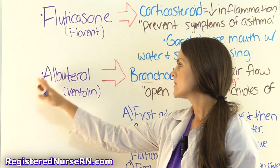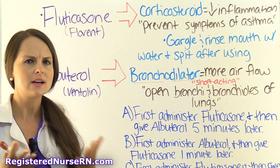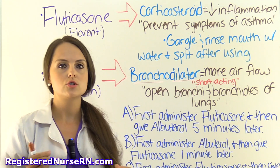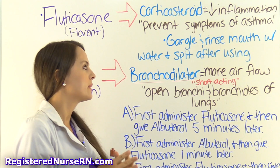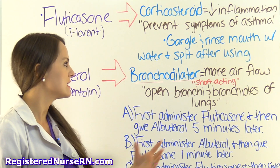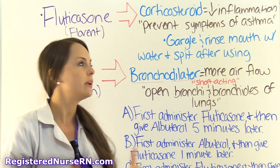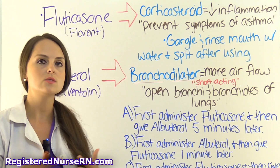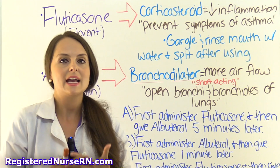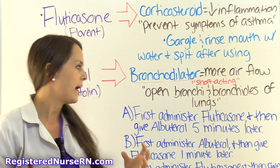Our next drug is albuterol, which is Ventolin. What is albuterol? It is a bronchodilator, and specifically a short-acting one, so it works for a short period of time. Just as its name says, it's going to open the bronchi and bronchioles of the lungs, so you get more airflow through those lungs. This is what a person with asthma really needs, because they have bronchoconstriction going on. After they inhale it, it opens those lungs up and they can breathe and get air.